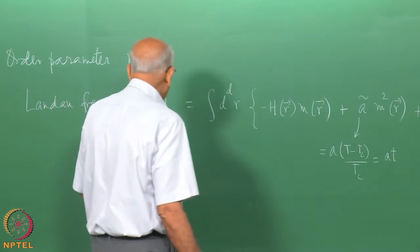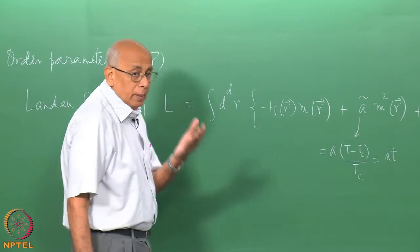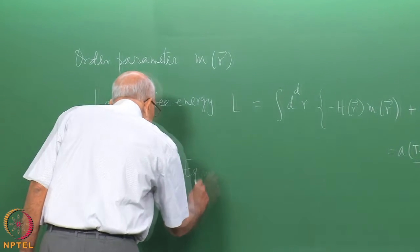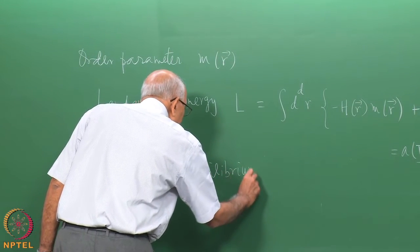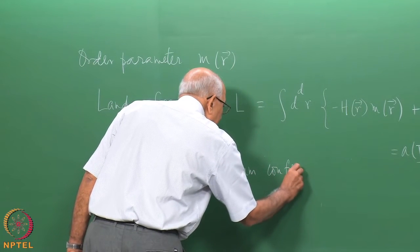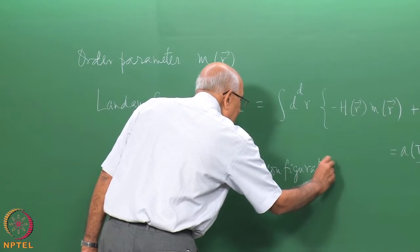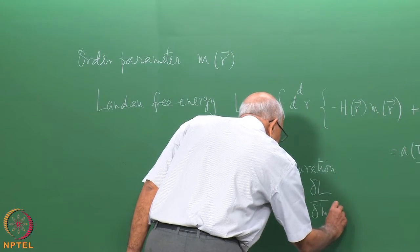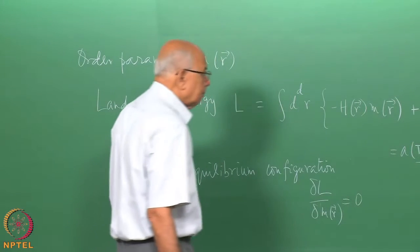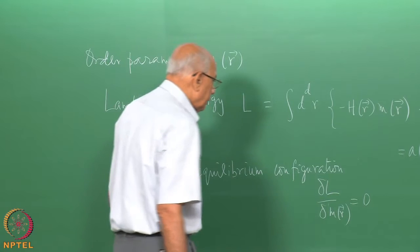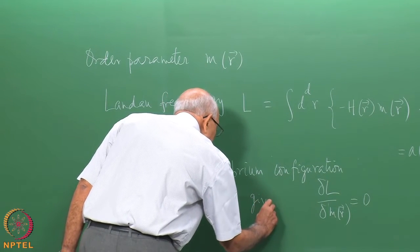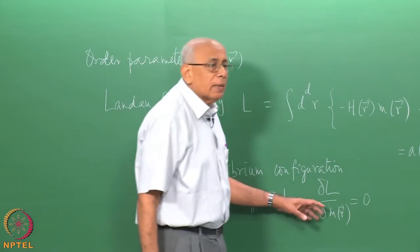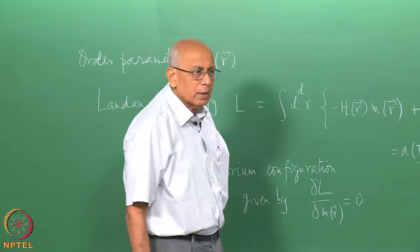So that was the Landau free energy. The equilibrium solution is found by minimizing this free energy; the equilibrium configuration is given by delta L over delta M of R equal to zero. We also have to ensure that it is a minimum rather than a maximum, but the structure of the functional makes it clear that it will be a minimum.